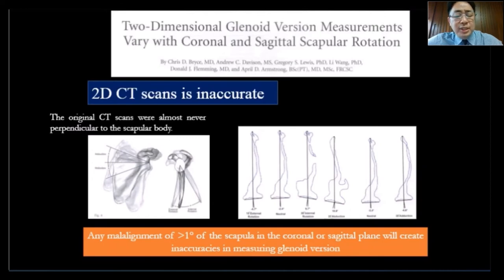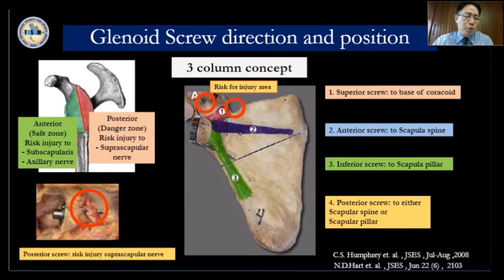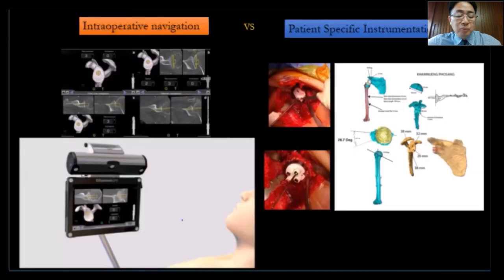For investigation, 2D CT scan is sometimes not accurate because the original CT scan is almost never perpendicular to the scapular body. Sometimes you need a 3D CT scan for better orientation. The glenoid is the most critical factor for reverse shoulder arthroplasty — especially for Asian people, our glenoid is very small, with no room for error. The posterior glenoid has a danger zone — you can penetrate into the suprascapular notch or spinoglenoid notch. With patient-specific instrumentation, you can solve this problem.